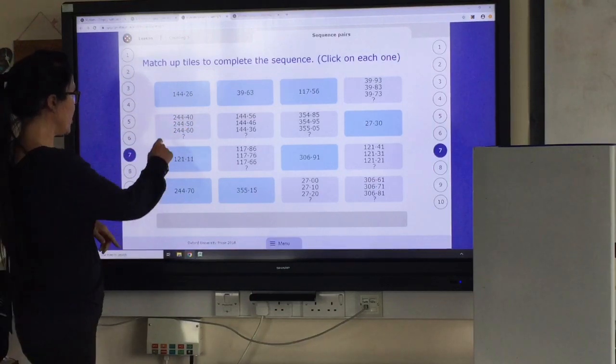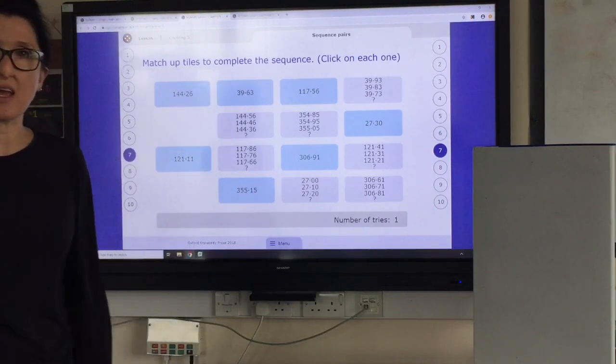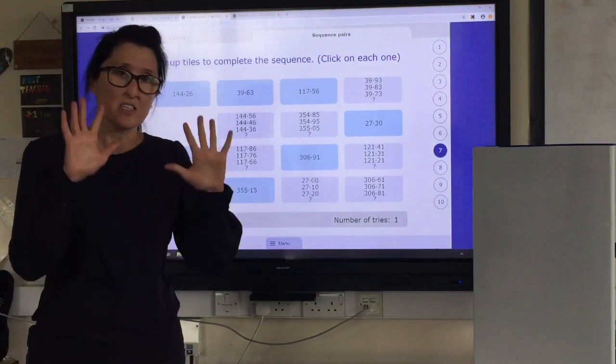I'm looking for 244.70. So I tap them both and they'll disappear. And that's how you play that game. Have fun. Email me if you need any help with anything. See you soon.